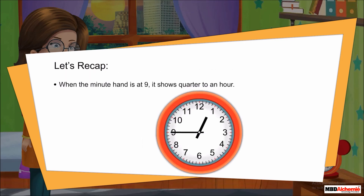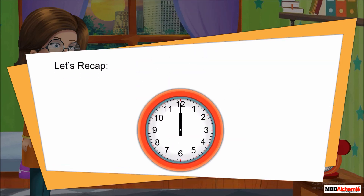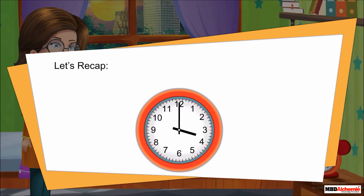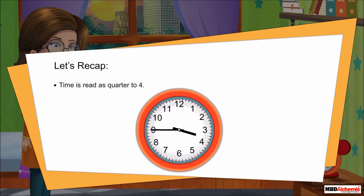When the minute hand is at 9, it shows quarter to an hour. Let's see some examples. If the hour hand is beyond 12 and closer to 1 and the minute hand is at 9, the time is read as quarter to 1. If the hour hand is beyond 3 and closer to 4 and the minute hand is at 9, the time is read as quarter to 4.